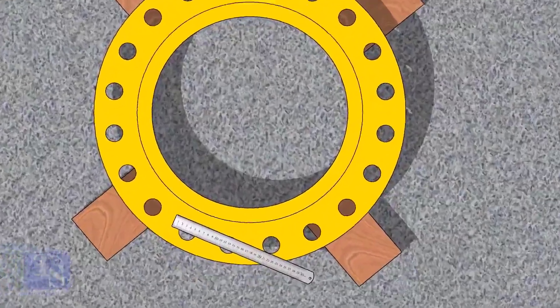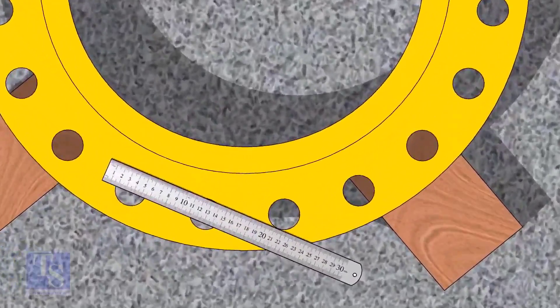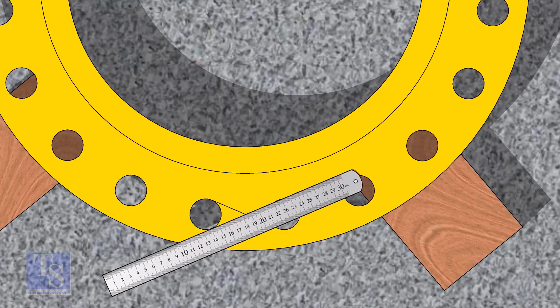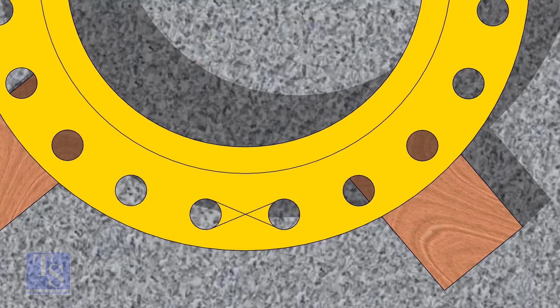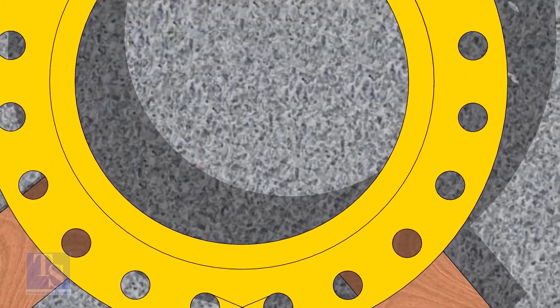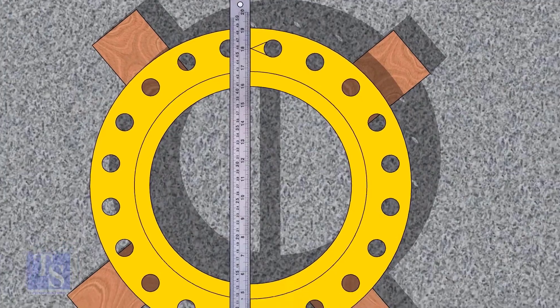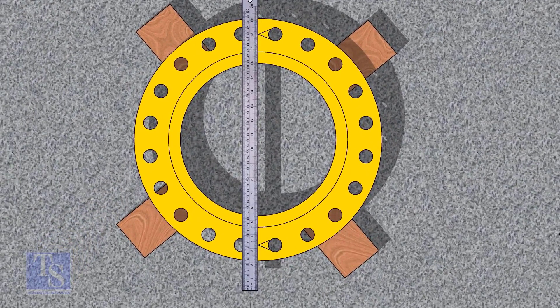Let us mark the center line of the flange. Draw tangential lines of two adjacent holes. The intersection of the lines is the center of these holes. Draw the center of the two holes on the opposite side. Draw the center line of the flange as shown.